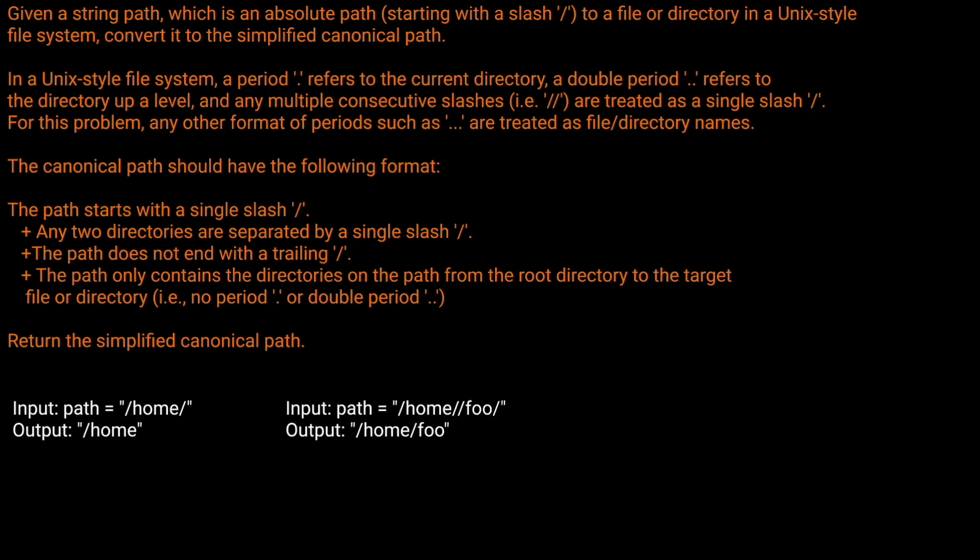Hello and welcome back to the Cracking Fang YouTube channel. Today we're going to be solving LeetCode problem number 71, Simplify Path. Let's read the problem description. Given a string path, which is an absolute path starting with a slash to a file or directory in a Unix-style file system, convert it to the simplified canonical path.